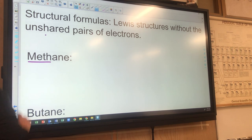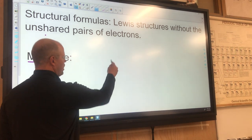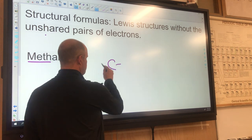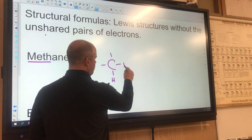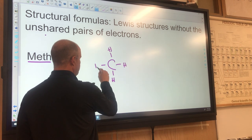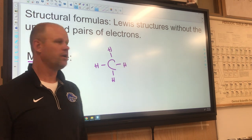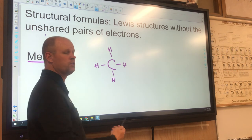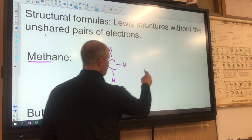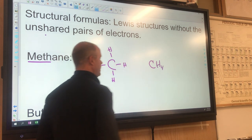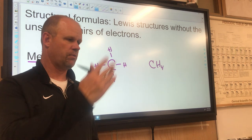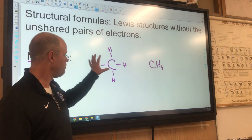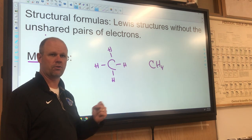Let's draw methane. 'Meth' means one carbon, so I draw one carbon and put as many hydrogens around it as will fit — one, two, three, four. Remember, four bonds on a carbon is all it can hold. So this is methane: a single carbon surrounded by hydrogens, all with single bonds because that's all hydrogen can do. The formula is CH4. That is natural gas — used for Bunsen burners and piped into homes as a heating source. Methane is a very small molecule.